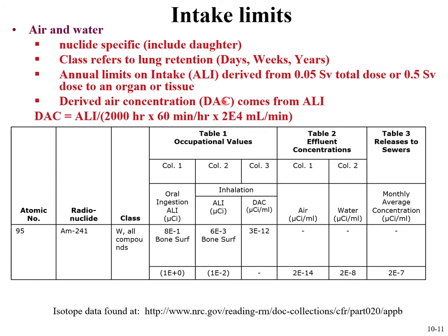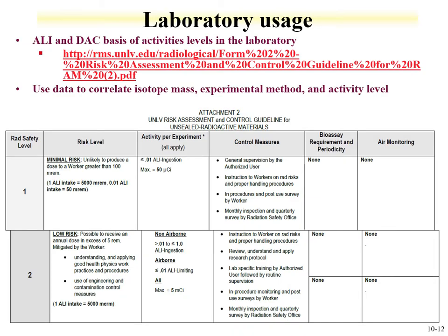The derived air concentrations are extremely small values listed in microcurie per milliliter, and you can find all this information for any radionuclide at the NRC website. The ALIs and DACs are the basis for activity levels in radiochemistry laboratories. As an example, the radiochemistry laboratory at the University of Nevada, Las Vegas uses activity levels based upon annual limit of intake and derived air concentrations.